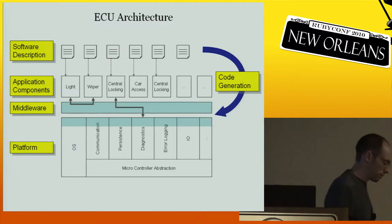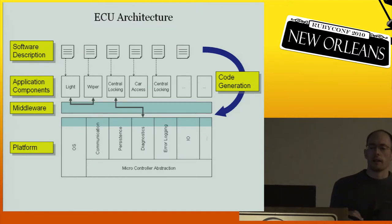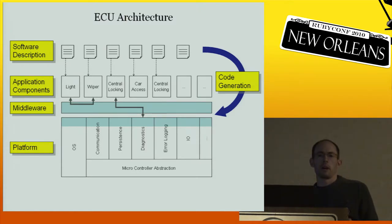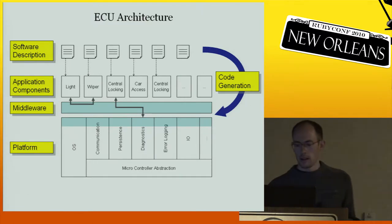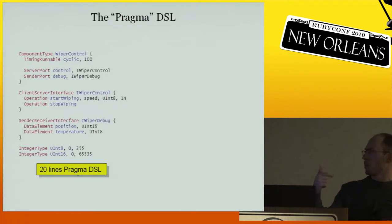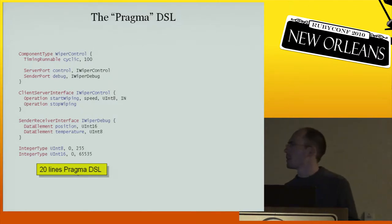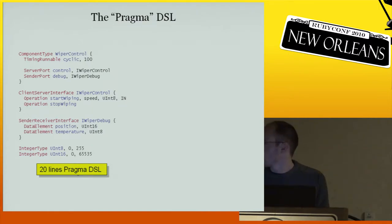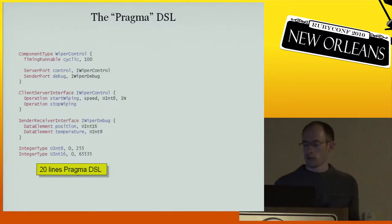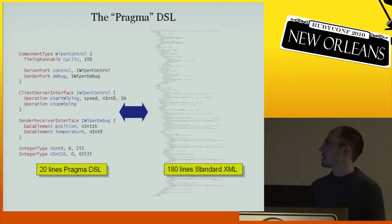So I took Ruby and my Argen framework and built a new little tool called Pragma, and created a little textual DSL for basically doing what these XML descriptions do, but in a very stripped-down way focused on this particular project. Here's an example: this little example says there is a software component called ViperControl. It has two ports — in AUTOSAR you can exchange data or provide operations for a kind of RPC. These 20 lines of Pragma DSL correspond to 180 lines of XML in the standard.